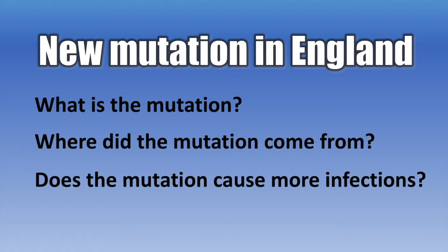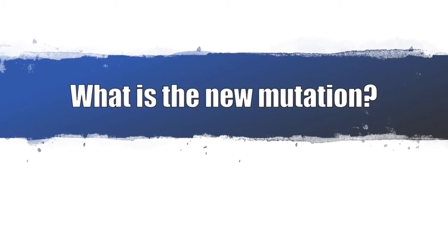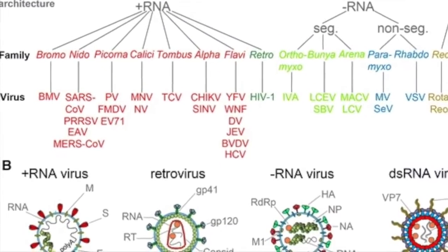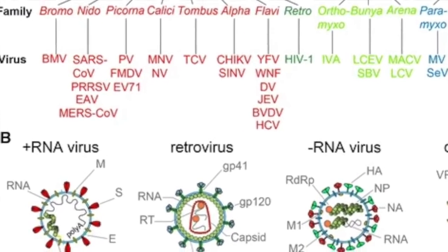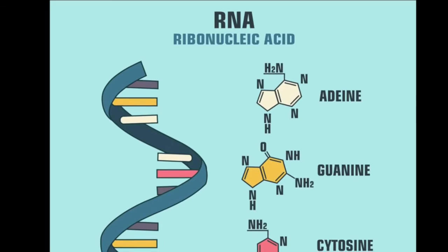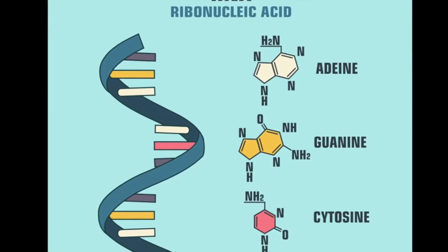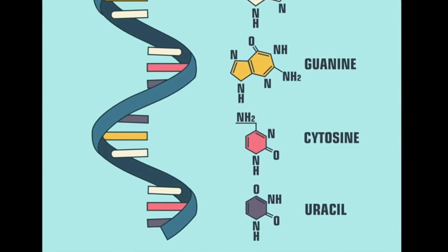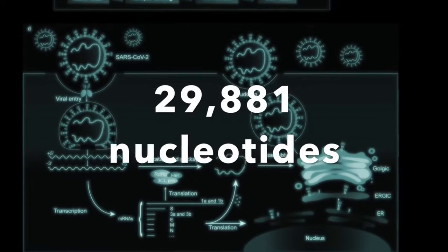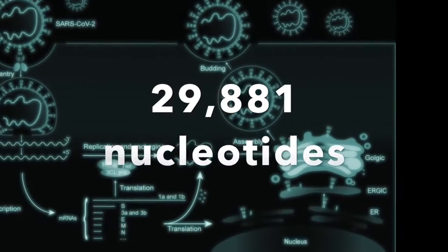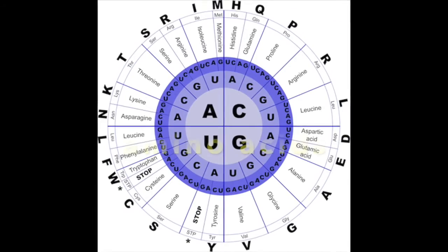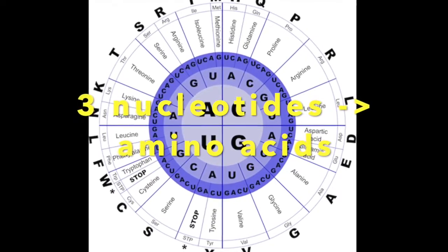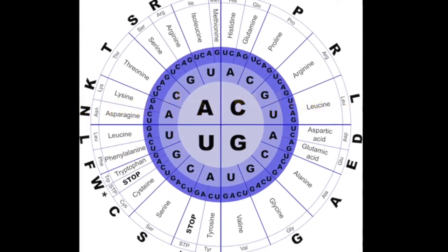Let's start with the first question: what is the mutation we're talking about? The coronavirus is a single-stranded RNA virus, just like Zika, dengue, or influenza. The RNA contains the genetic code used to produce the coronavirus. In the case of SARS-CoV-2, the genome comprises a chain of 29,881 nucleotides — a sequence that is the blueprint for making amino acids used to build the actual virus particle.